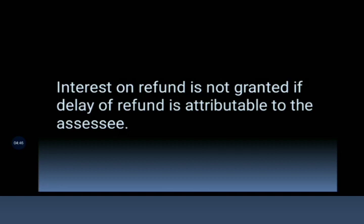If the refund is not given even after processing due to any reason like a mistake in calculation, you can file a rectification request under Section 154 of the Income Tax Act. But if the mistake is attributable to the assessee — meaning it is attributable to you — then even after passing the order of rectification by the income tax department, the interest will not be given for the period of delay which is attributable to the assessee. In case of dispute over whether the mistake is attributable to the assessee or not, the same will be decided by the Chief Commissioner of Income Tax or the Commissioner of Income Tax, and his decision will be final.